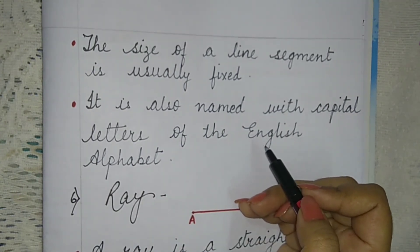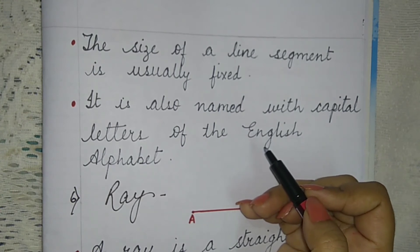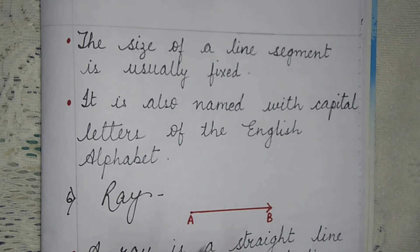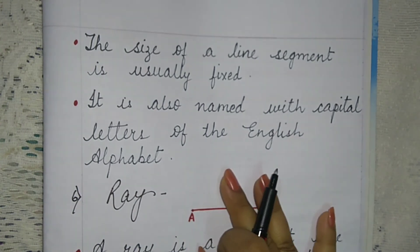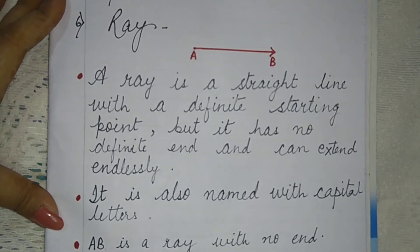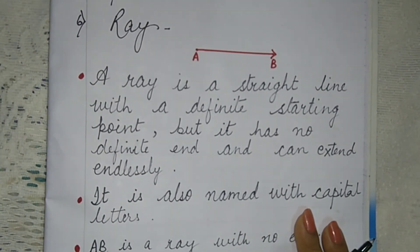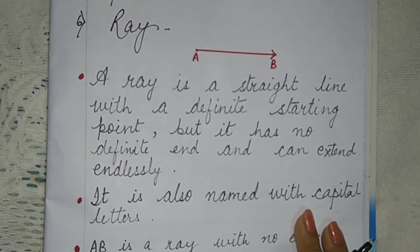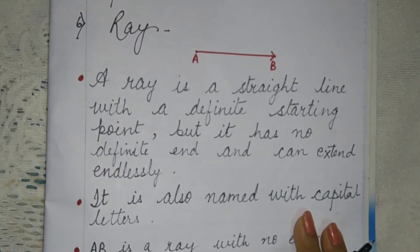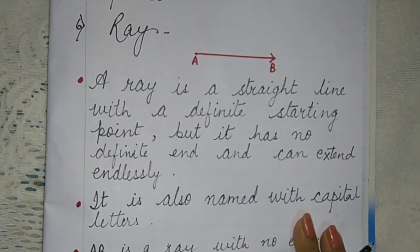We denote all points, lines with capital letters of the English alphabet. Now comes to ray. A ray is a straight line with a definite starting point but it has no definite end and can extend endlessly.